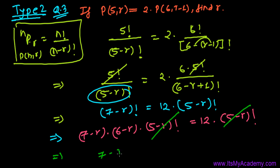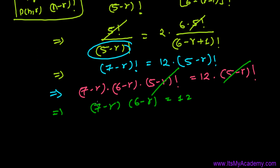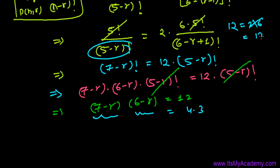After cancellation, we get (7 minus R) times (6 minus R) equals 12. These are two consecutive numbers in decreasing order. We need two consecutive numbers whose product is 12 — that is 4 times 3. Note that 2 times 6 are not consecutive, and 12 times 1 are not consecutive, so the only valid pair is 4 and 3.